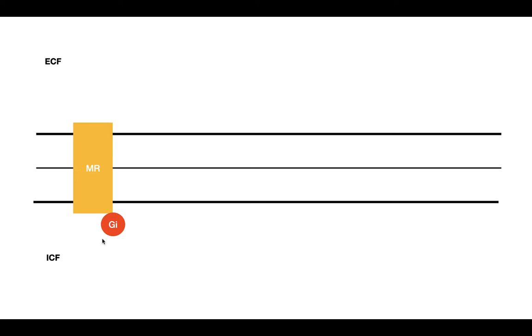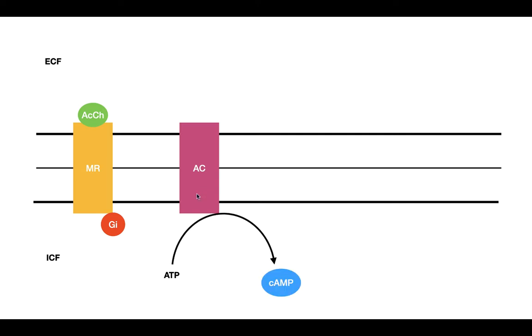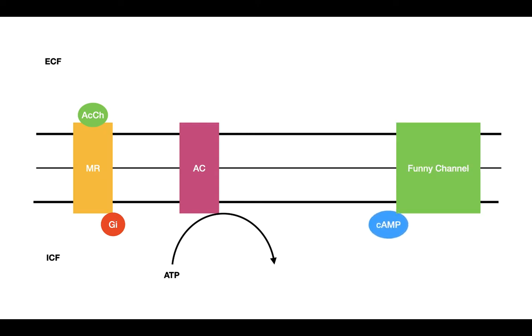Now let's look at the second way in which the parasympathetic nervous system decreases the heart rate. We're going to bring in our muscarinic receptor again — remember it is a Gi-coupled protein receptor. Acetylcholine comes in and binds to the receptor. At the same time, we have adenylate cyclase, which converts ATP into cyclic AMP. When the muscarinic receptor is activated, the Gi protein is activated, which binds to adenylate cyclase and inhibits its activity. Now cyclic AMP, which is produced by adenylate cyclase, is able to bind to another channel in the pacemaker cell called the funny channel. The funny channel is the channel that regulates phase four for the pacemaker cells.